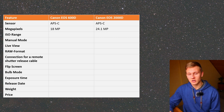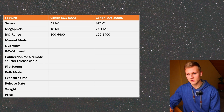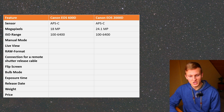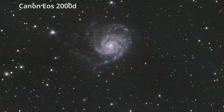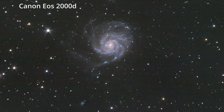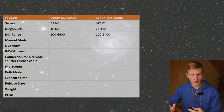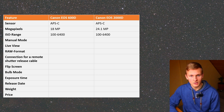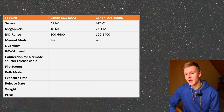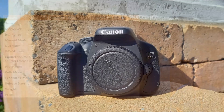The next aspect is the ISO range, which is important because it helps increase the brightness of our images. Both cameras support an ISO range of 100 to 6400, so there is no difference there. Regarding manual mode: when using cameras for astrophotography we need to set the exposure time, ISO value, and aperture manually. Both cameras have a manual mode, which is perfect for astrophotography.